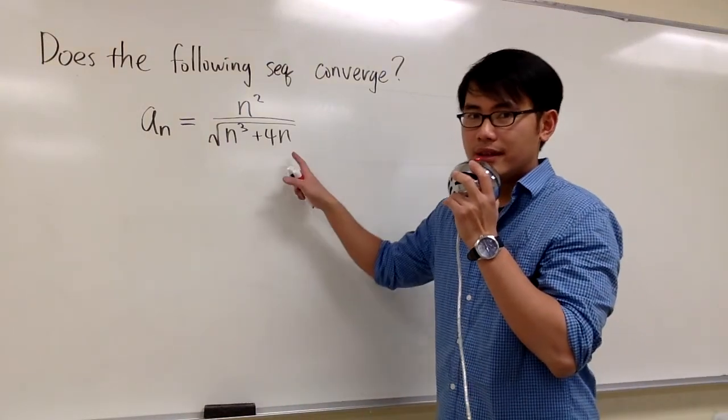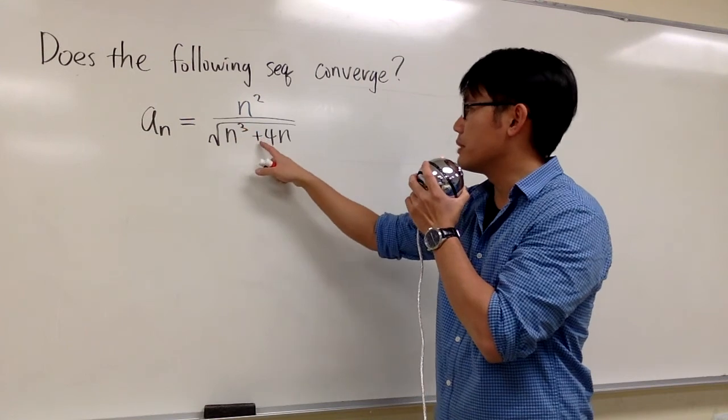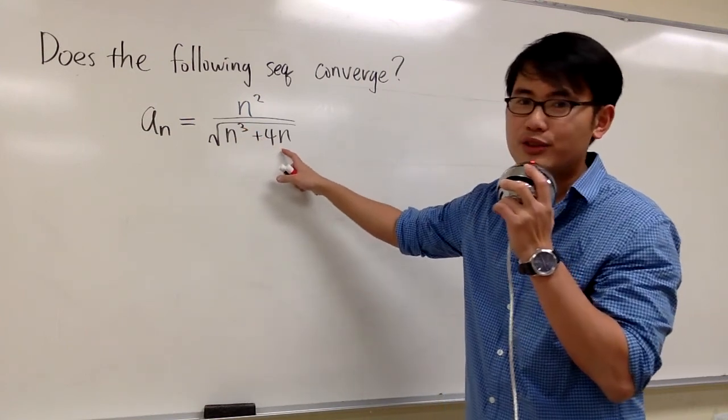We would like to know if the sequence n² over √(n³ + 4n) converges or diverges.